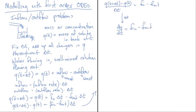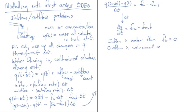Now we just need to decide what f_in and f_out are for any given problem. If the inflow is pure water, then f_in equals zero because there's no mass of solute — q is keeping track of solute. For the outflow, if the outflow is the well-mixed contents of the tank, then f_out is a product of two things.